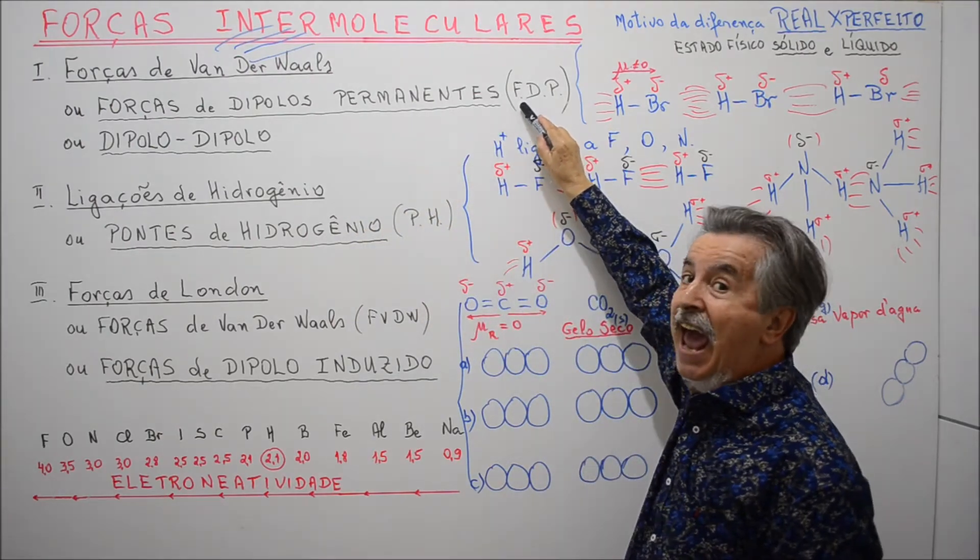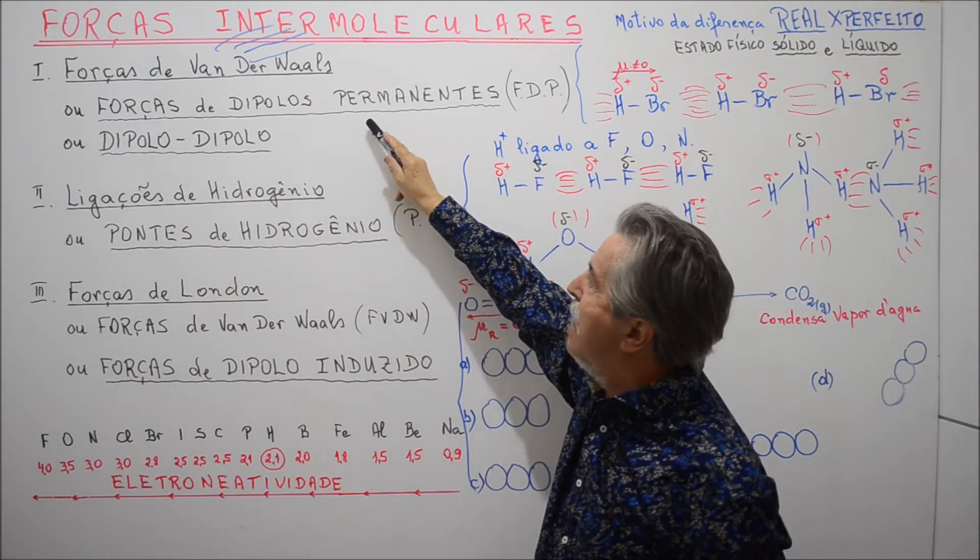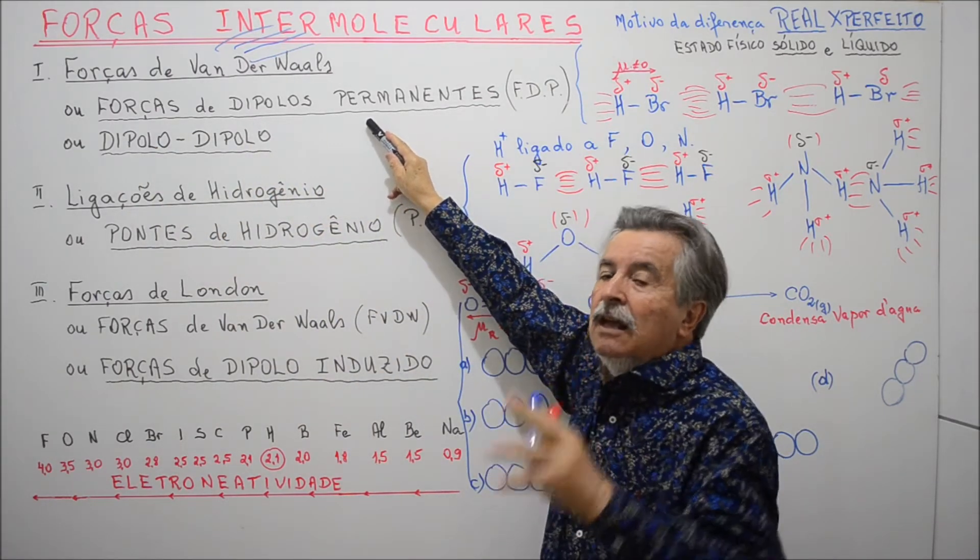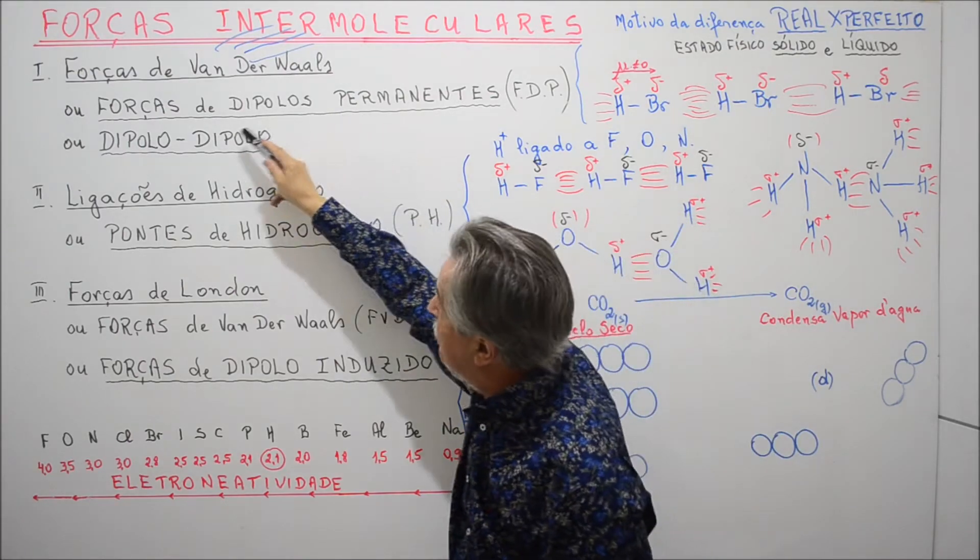E nós, entre nós, as chamávamos de FDPs, forças de dipolos permanentes. Era assim que eram chamadas e nos livros mais antigos estão dessa forma.